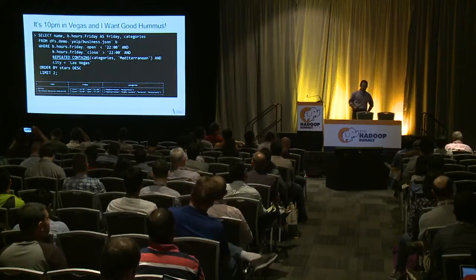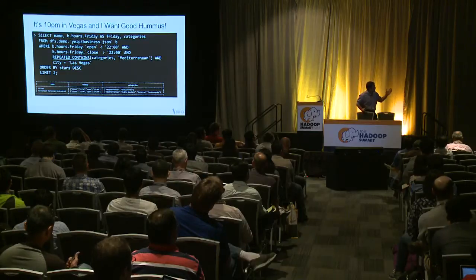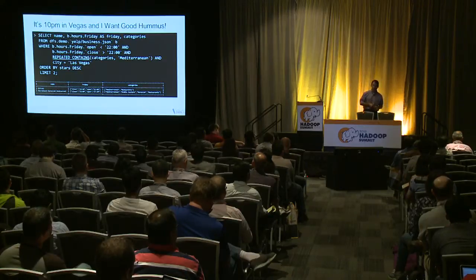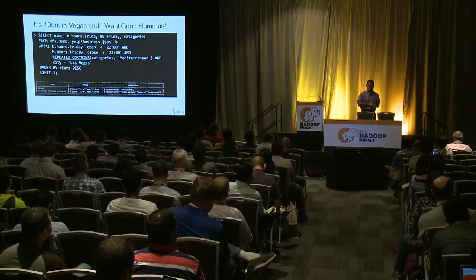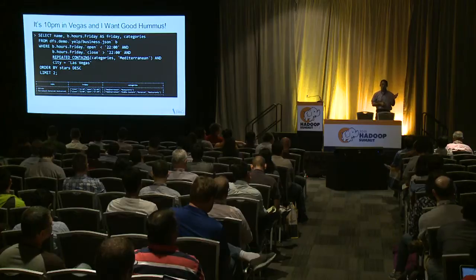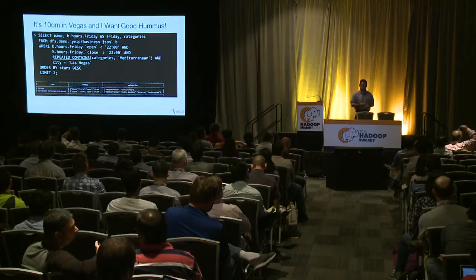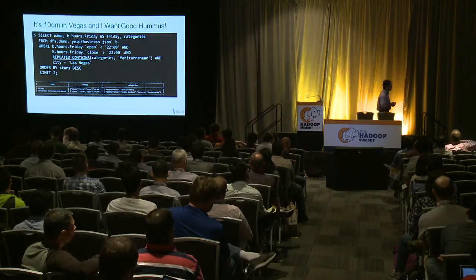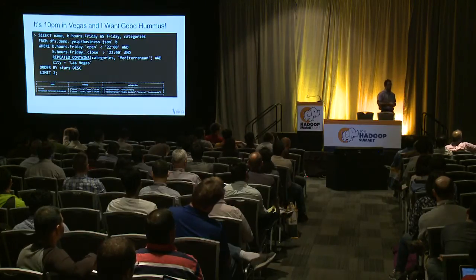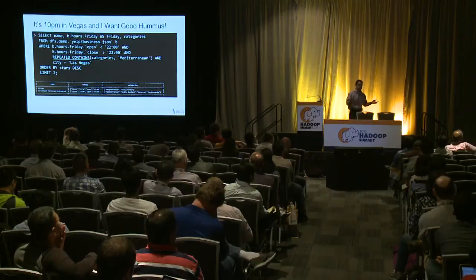It's 10pm in Vegas and I want a good Mediterranean restaurant. I use the same open/close hour conditions, but also use a function called repeated_contains, which lets me look into an array on the fly as the query runs with very high performance. I'm looking for the categories array to have an entry equal to 'Mediterranean'. Two results come back: Olives and another restaurant — both Mediterranean restaurants open at 10pm.